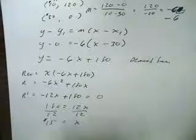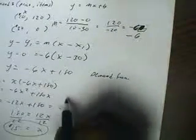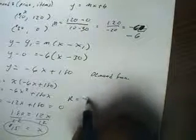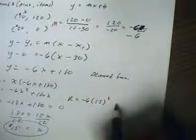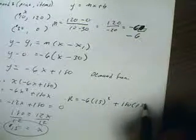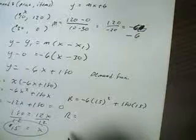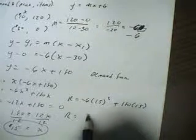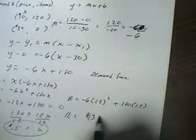What would be the revenue generated if we sell things for $15? My revenue function gives us: revenue equals negative 6 times 15 squared plus 180 times 15. The revenue would end up being $1,350.